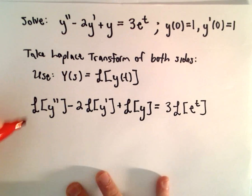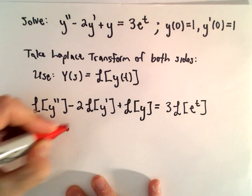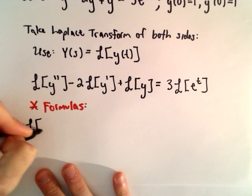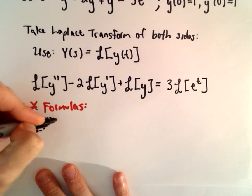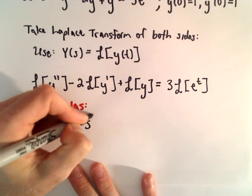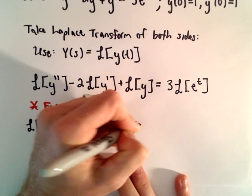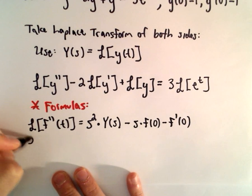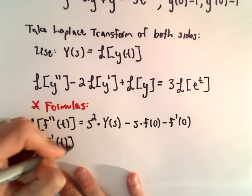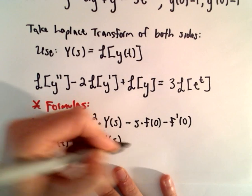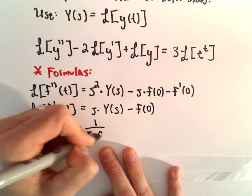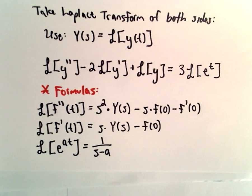Now, some formulas that I'm going to use here, which you can find from tables — or you can always justify these yourself using the definition. The Laplace transform of y double prime is s squared times Y of s minus s times f of 0 minus f prime of 0. The Laplace transform of f prime of t is s times Y of s minus f of 0. And the Laplace transform of e to the at is 1 over s minus a, where s is greater than a.